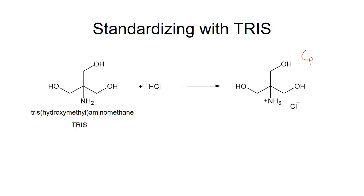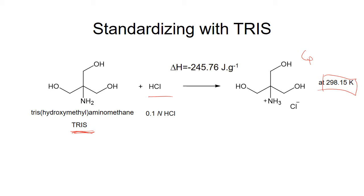We use a reaction with a known enthalpy change: the acid-base neutralization reaction. The acid is liquid hydrochloric acid and the base is tris(hydroxymethyl)aminomethane, or simply TRIS — TRIS is a solid, hydrochloric acid is a liquid. When the HCl concentration is 0.1 M and the temperature is 298.15 K, the reaction enthalpy is 245.76 J/g. So if we use TRIS with mass m, the reaction enthalpy is m × 245.76 J.